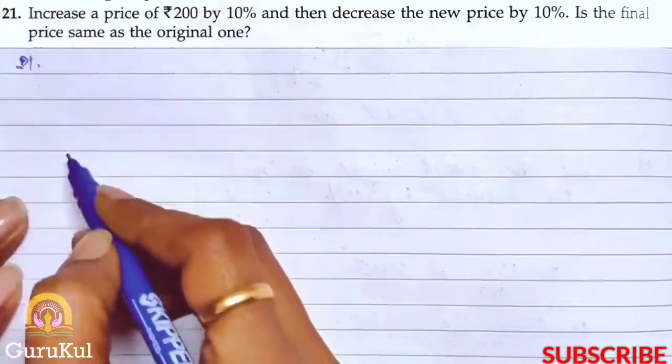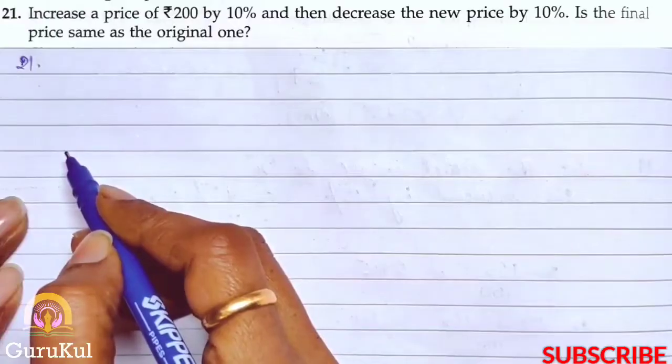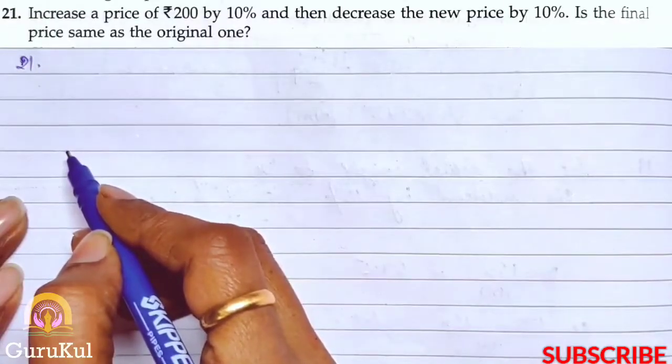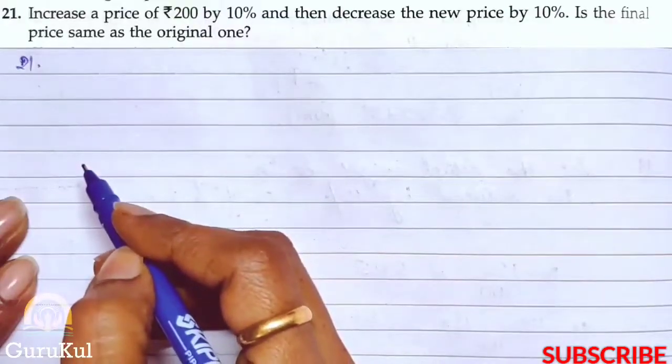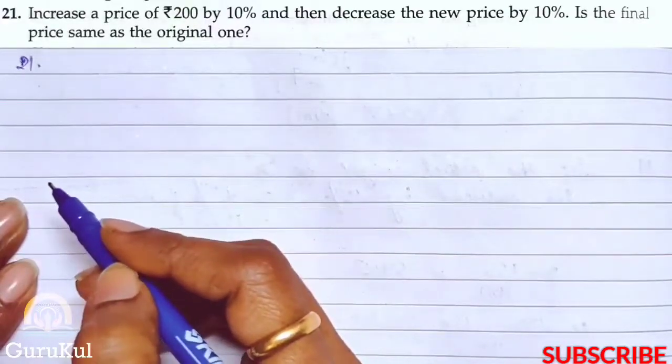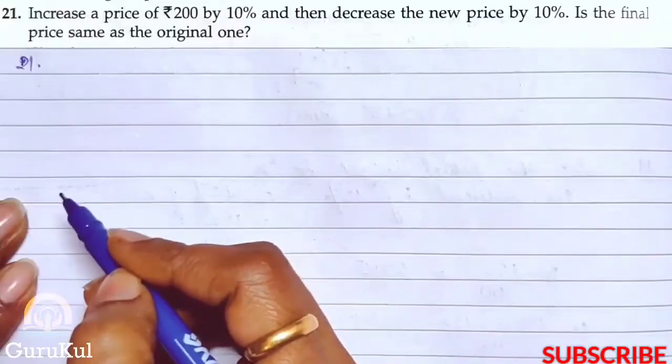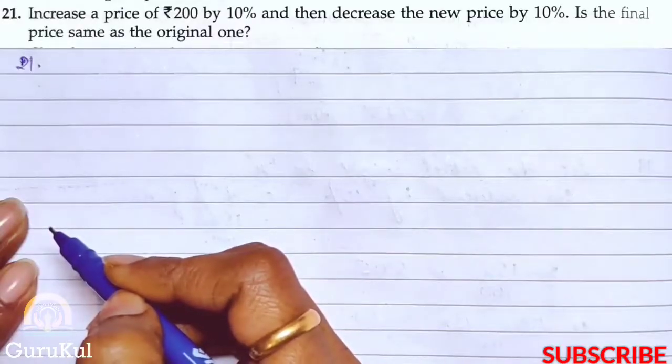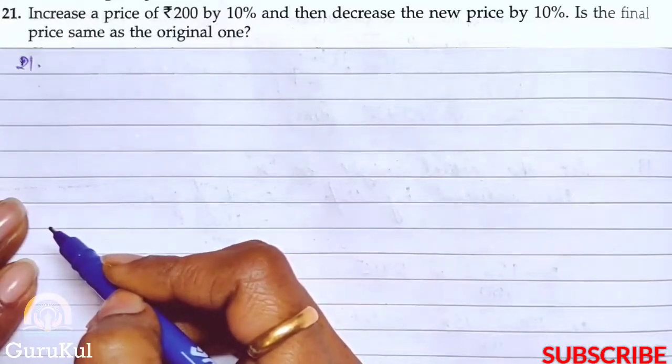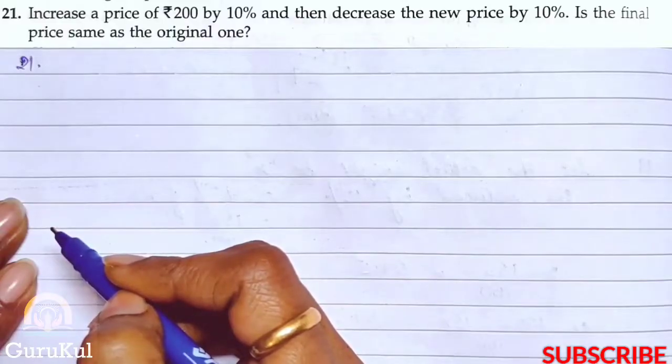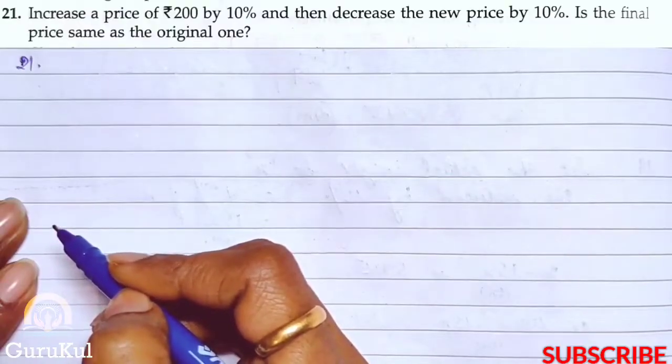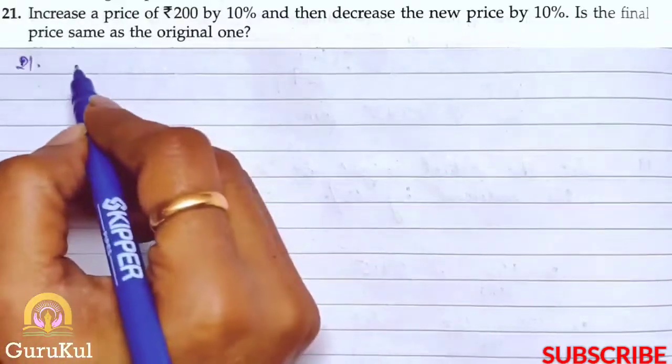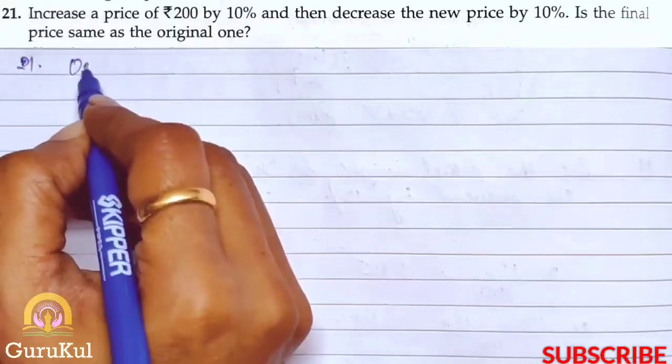Now question number 21. Increase a price of rupees 200 by 10 percent. First instruction. Second instruction: then decrease the new price by 10 percent. Is the final price same as the original one? To find out, we have to solve them.